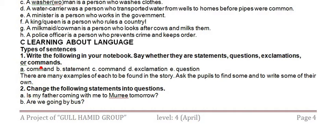The sentences given are: A — 'Don't leave me here alone' — this is a command. B — 'This is your only chance' — this is a simple statement. C — 'Get out of my house' — this is a command. D — 'What a wonderful moment that is!' — it is expressing feelings, so this is an exclamation. E — 'Is it the highest mountain in the country?' — this is a question. There are many examples of each to be found in the story.